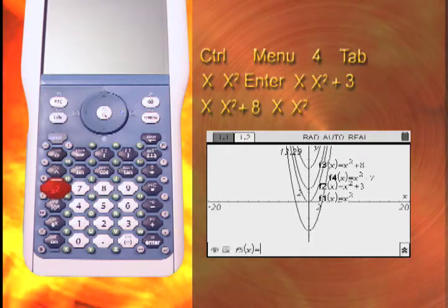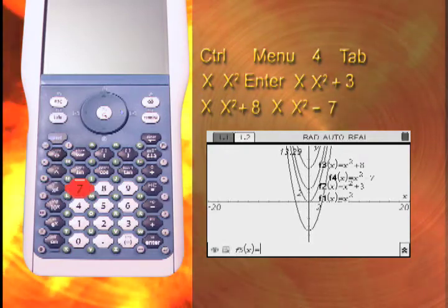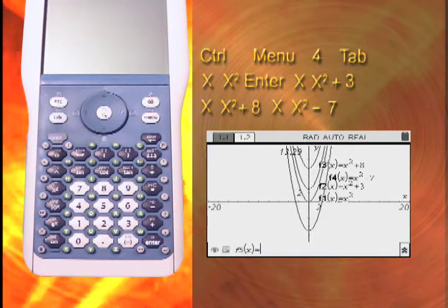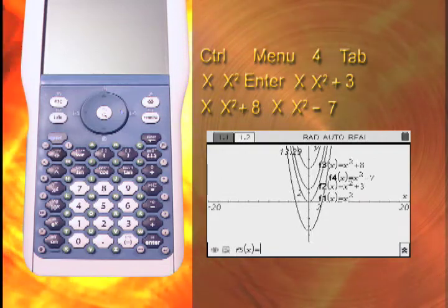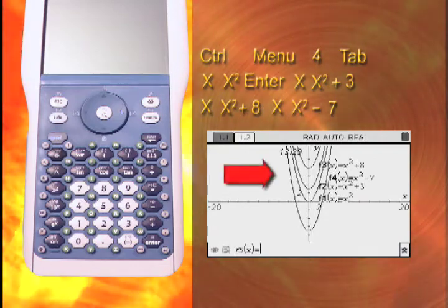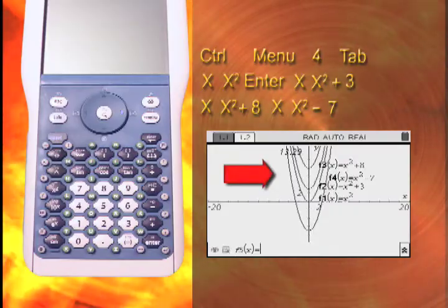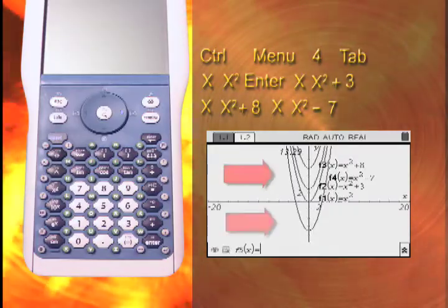Notice that adding a positive constant to x squared, like 3 or 8, shifts the parabola upward, that many units. Adding a negative constant shifts it downward accordingly.